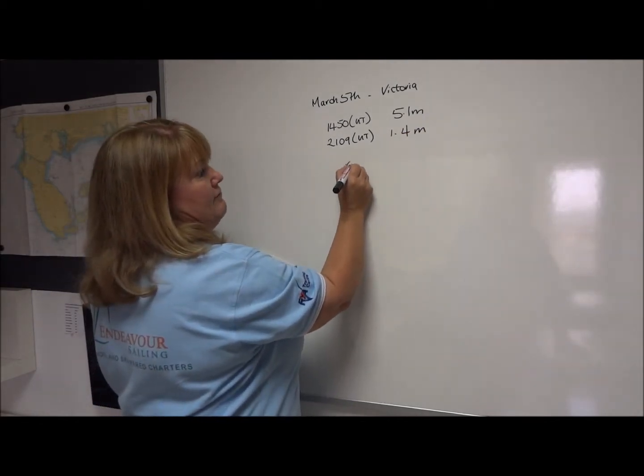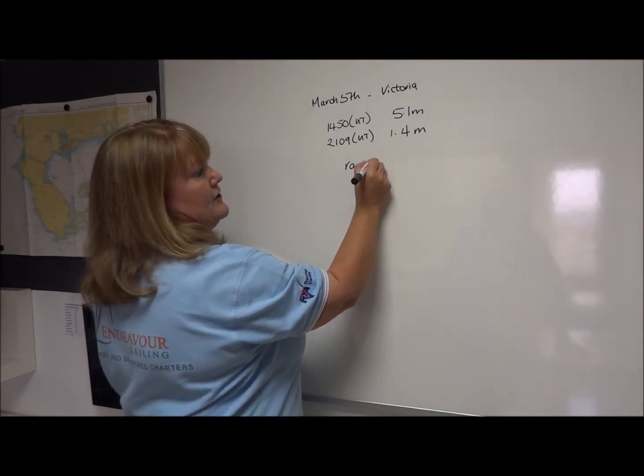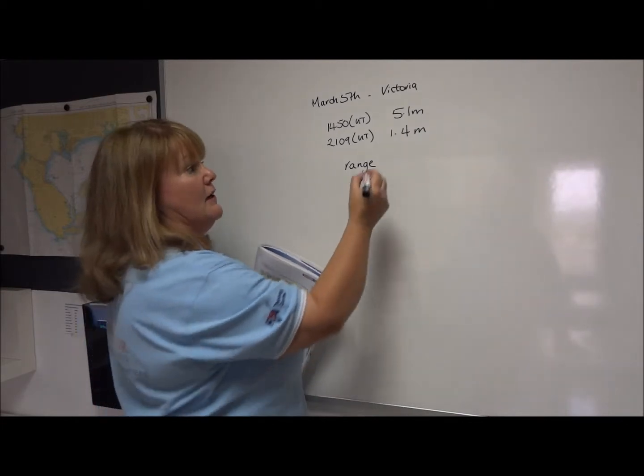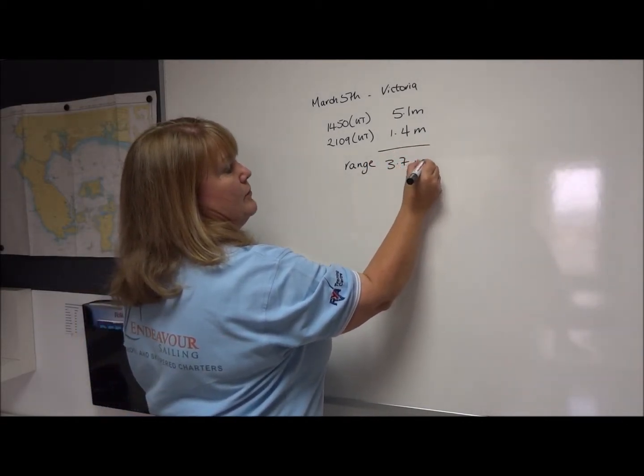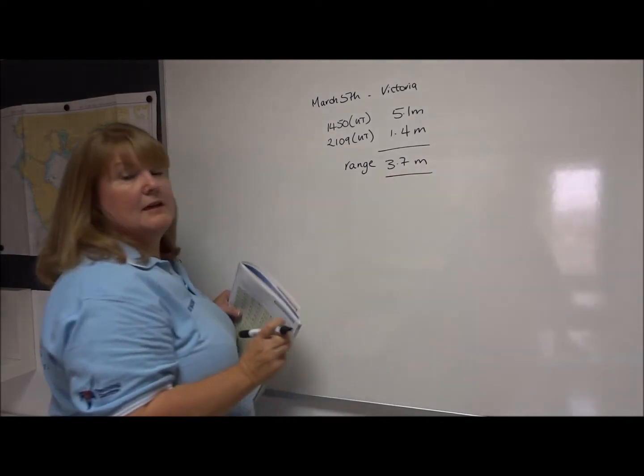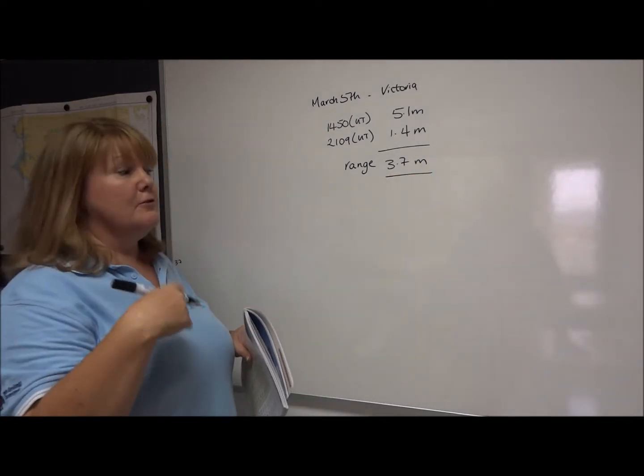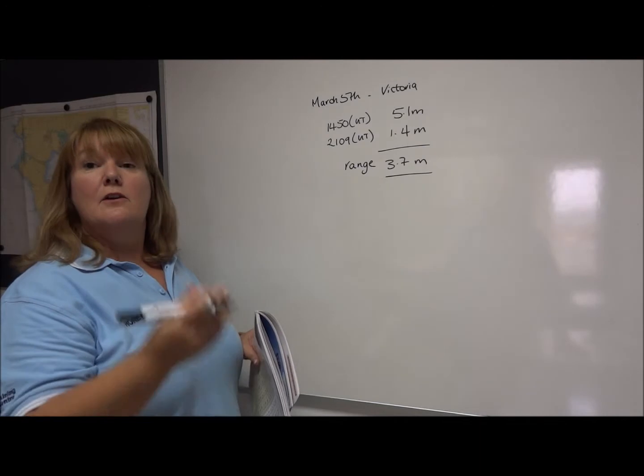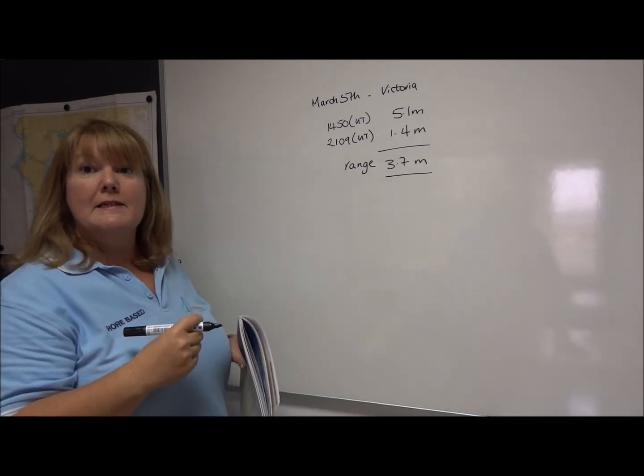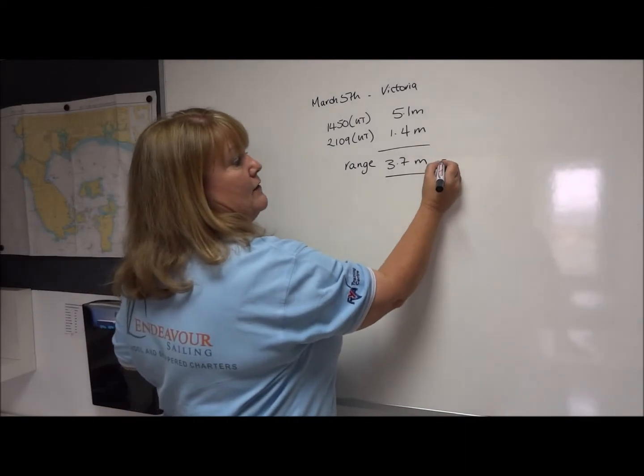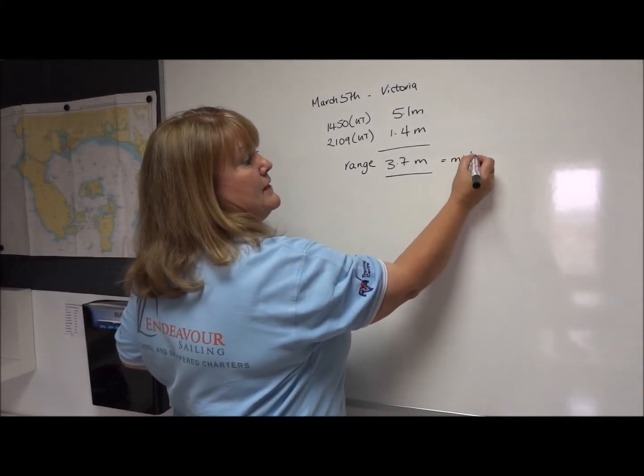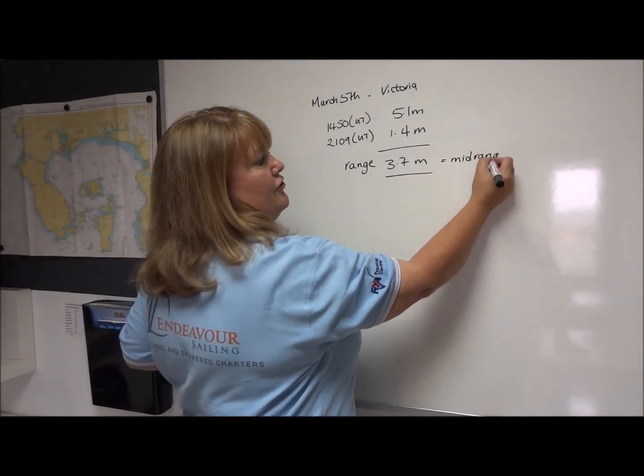So if we find the range again, that difference between high water and low water, we have a range of 3.7 metres. Now this doesn't fall at our 4.9 or our 2.4 metres. It's almost in the middle. So we can call this a mid-range tide.